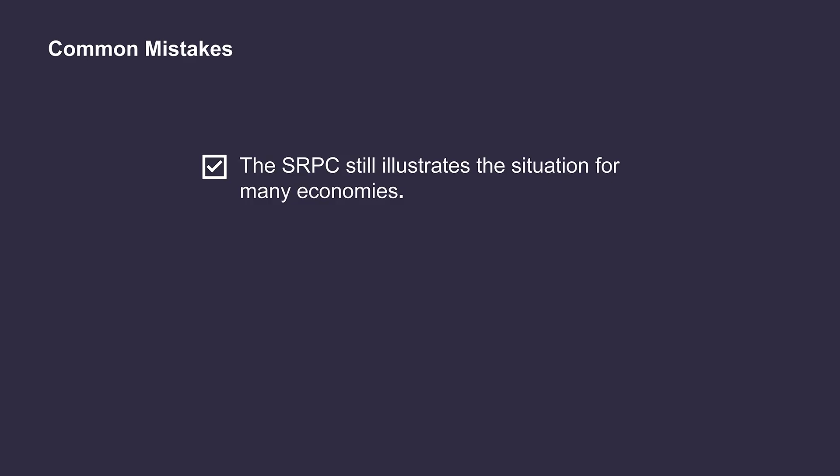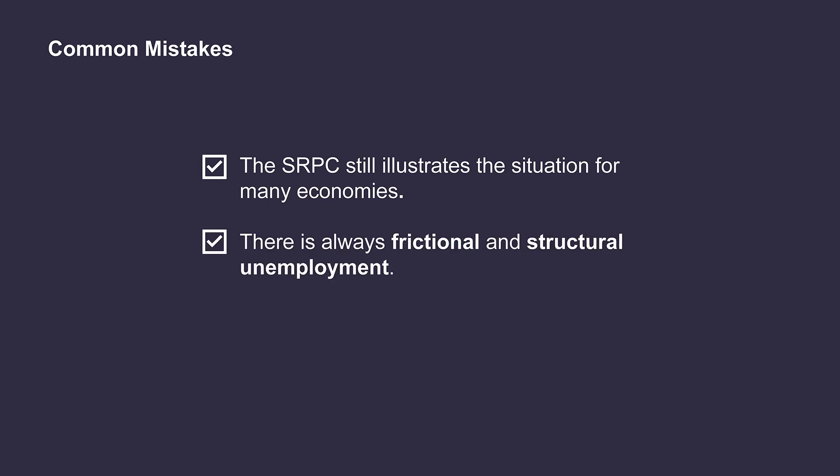What are the most common mistakes? First of all, even though the long-run Phillips Curve exists, this does not mean the short-run Phillips Curve has no use — it is a short-run effect that still happens in many economies. Also, even though the natural rate of unemployment refers to a level of full employment and ideal real GDP, this does not mean there are no people without jobs. There is always frictional and structural unemployment.